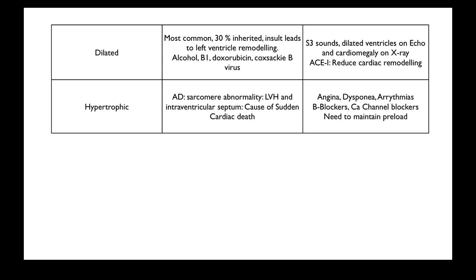Treatment focuses on managing angina. These patients, due to having such thick myocardium, have an increased oxygen demand and an inefficient ventricle, which requires more oxygen to do the same amount of work as an efficient one. They also unfortunately suffer from shortness of breath and arrhythmias. A beta blocker or calcium channel blocker is the mainstay of treatment, but you don't want to offload preload too much, as that provides cardiac drive per the Starling curve, so avoid excessive diuretics which would reduce preload.